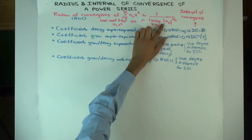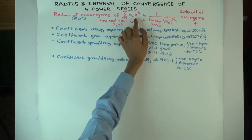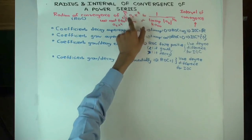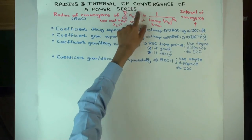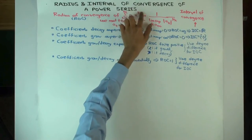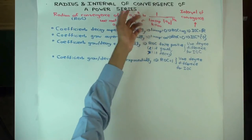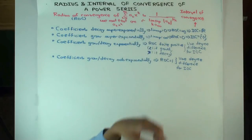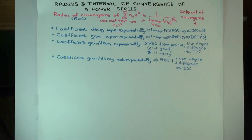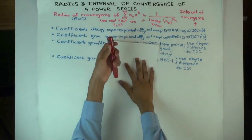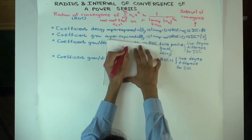This formula comes from applying the root test to the summation of ak x to the k. You want that the whole term to the 1 over k: if it's greater than 1 it diverges, if it's less than 1 it converges, and writing that out gives you this formula. This tells you the radius of convergence. If the radius of convergence is c, then the interval of convergence is minus c to c.